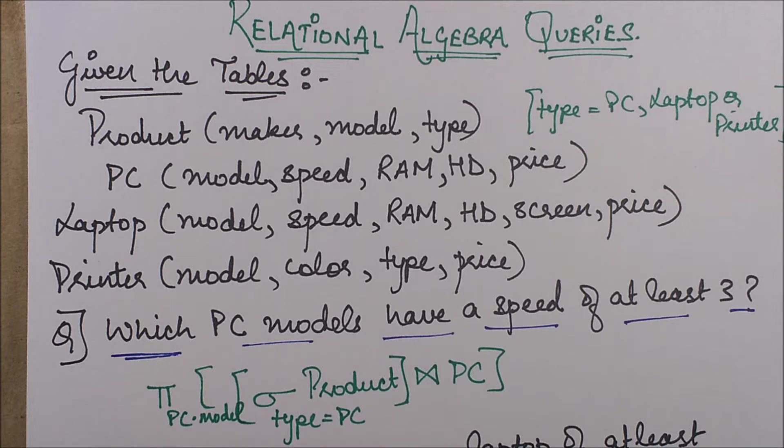What we are going to do is we have these four tables, and on the basis of these four tables and a certain set of queries, we are going to write the relational algebra expressions for those. So let's start.